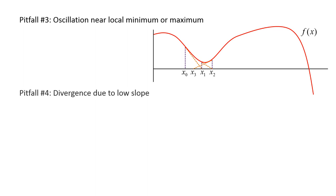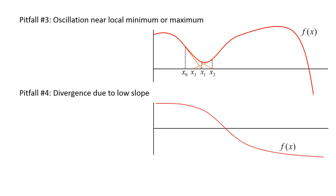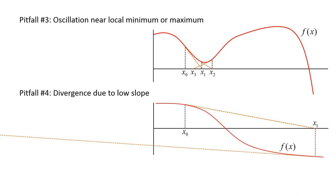The fourth pitfall of the Newton-Raphson method is the possibility of divergence, which occurs when each iteration takes us farther away from the root. For example, a function with a low slope far to the left and far to the right of the root can cause each iteration to diverge farther and farther from the actual root. In order to identify situations where divergence occurs, you may want to terminate the program if the root estimate exceeds a certain very large value.